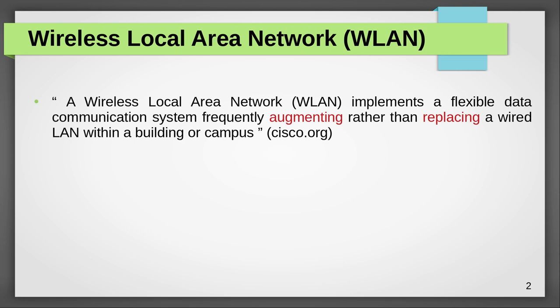We start with a definition for the wireless local area network given by Cisco: a wireless local area network implements a flexible data communication system, frequently augmenting rather than replacing a wired local area network within a building or campus. Here you have to highlight the term 'augmenting' — that means you have to view the wireless LAN as a supporter to the existing wired network, but not as a replacer.